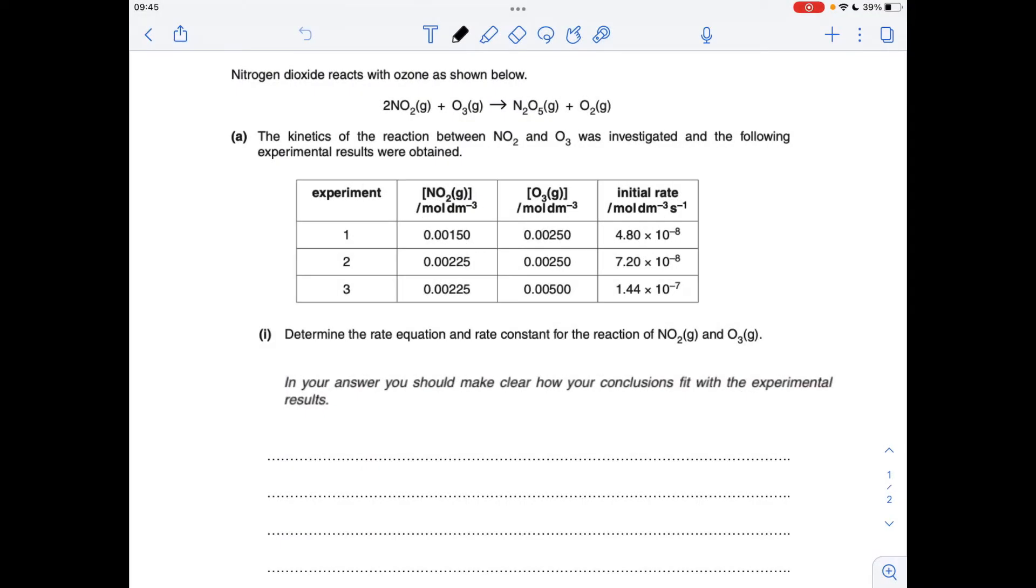Pretty straightforward question this one, so we've just got to work out the order of reaction for the two reactants, work out the rate constant, and then there's a little mechanism question at the end. So to get the order of reaction with respect to the NO2, we can use experiments 1 and 2, you can see the O3 concentration hasn't changed. So what's happening to the concentration of the NO2? It's actually gone up by a factor of 1.5.